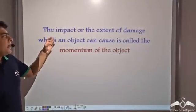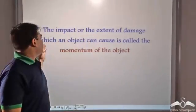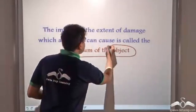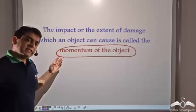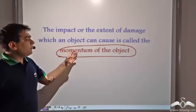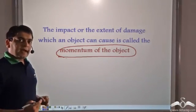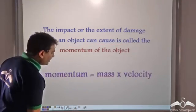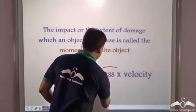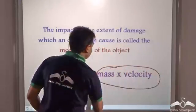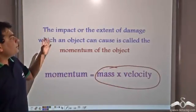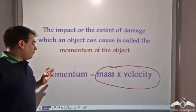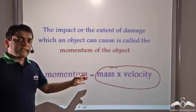Now the impact or extent of damage which an object can cause is called the momentum of the object in physics. And we have just seen that the momentum of the object is dependent on mass and velocity. So the momentum of an object is given as mass into velocity. So momentum is the impact or the extent of damage which an object can cause, and the momentum is equal to mass into velocity.